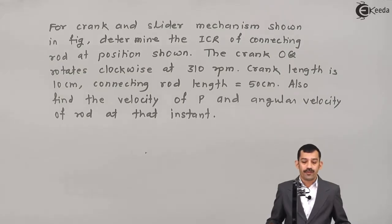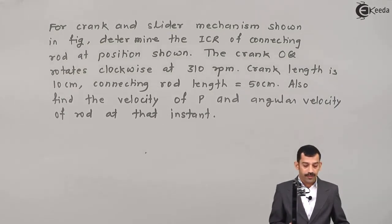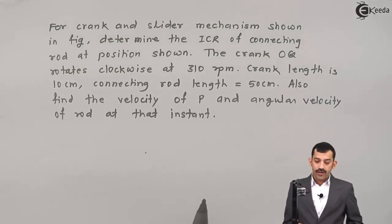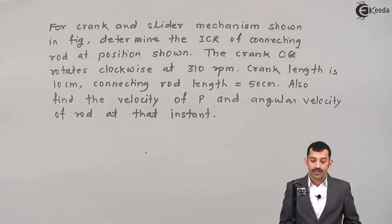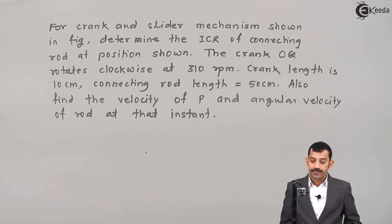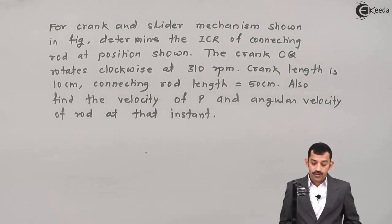We'll solve a problem on kinematics of rigid bodies. For a crank and slider mechanism shown in the figure, determine the instantaneous center of rotation of the connecting rod at the position shown. The crank OQ rotates clockwise at 310 RPM, crank length is 10 cm, connecting rod length is 50 cm. Also find velocity of P and angular velocity of the rod at that instant.